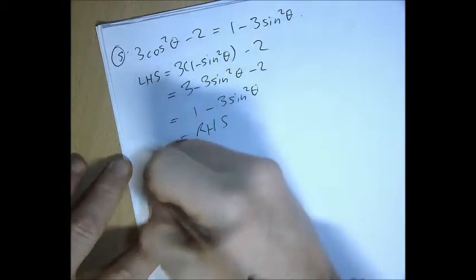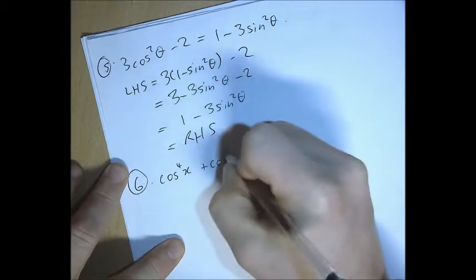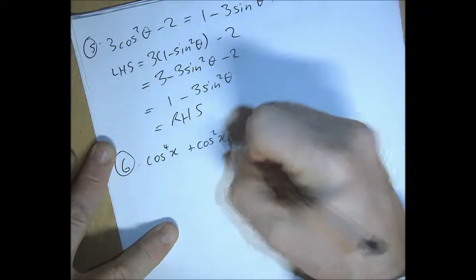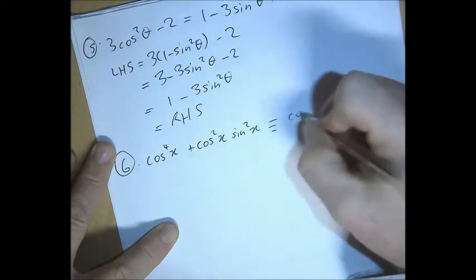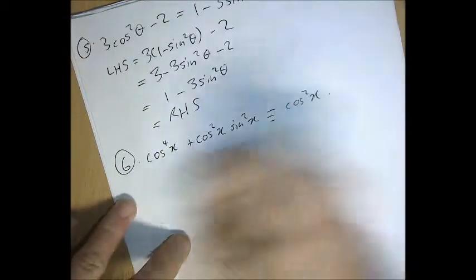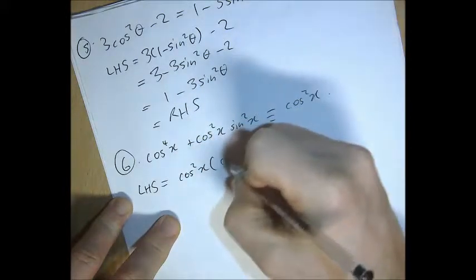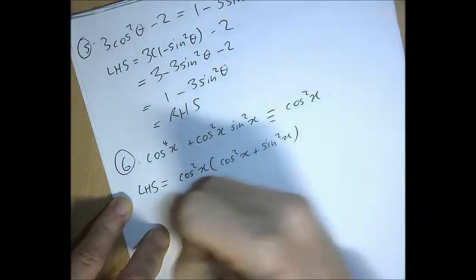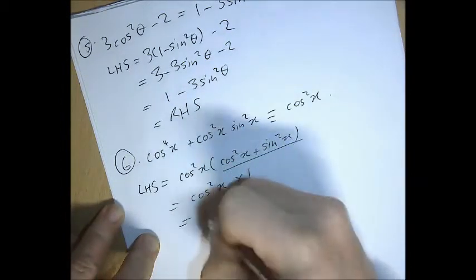The sixth identity to prove is that cos⁴x + cos²x · sin²x = cos²x. I start with the left-hand side and begin by factorising it — taking out a factor of cos²x — and then sin²x + cos²x equals 1, so the expression equals cos²x. We're done.